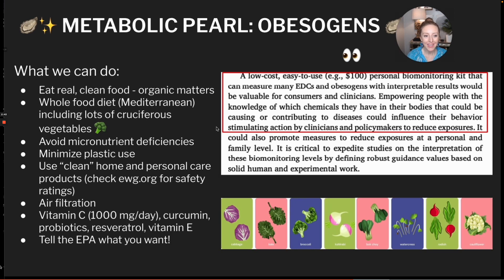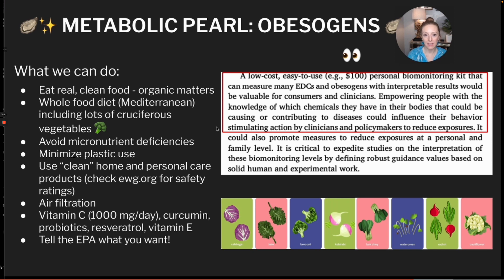So what can we do? The most important part. The first thing is just eating real, clean, whole food — and ideally organic food to minimize pesticide exposure. The added benefit of eating a nutrient-rich whole food diet is that micronutrient deficiencies can exacerbate the problems with obesogens. Also, added sugar in and of itself — like fructose — is an obesogen. So sticking to whole, real, clean foods is really important. We also want to include cruciferous vegetables — things like broccoli, kale, cauliflower, bok choy, and cabbage — which have sulforaphane, which activates our antioxidant defense systems.